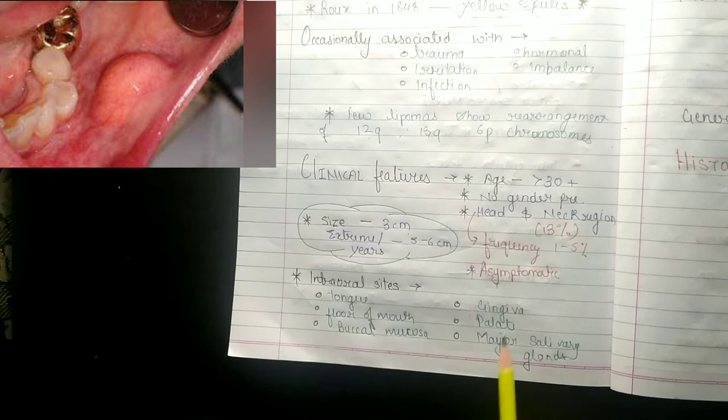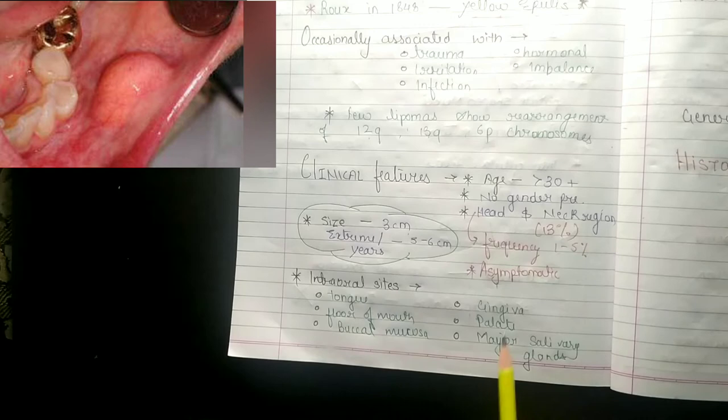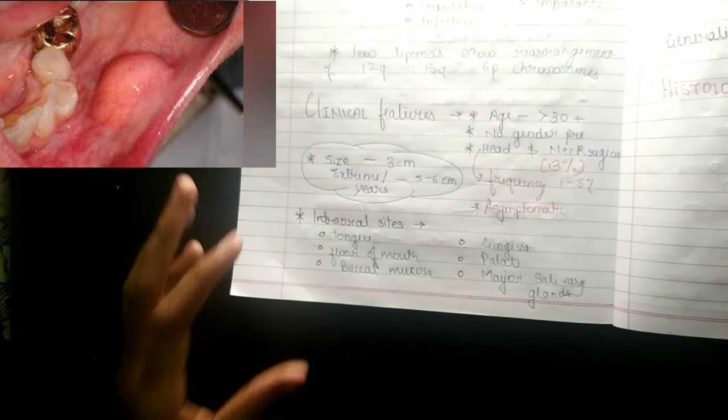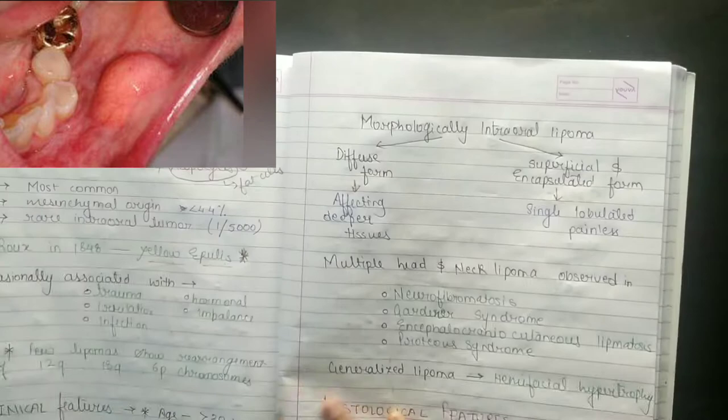Intraoral sites include the tongue, floor of mouth, buccal mucosa, gingiva, palate, and major salivary glands. There are many possible intraoral locations, with the tongue, floor of mouth, buccal mucosa, gingiva, and palate being the most notable.